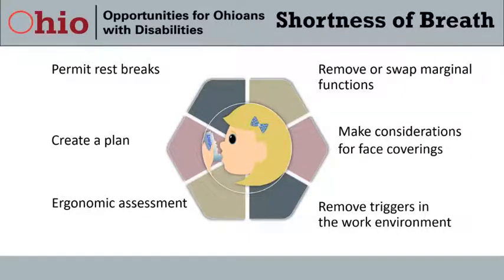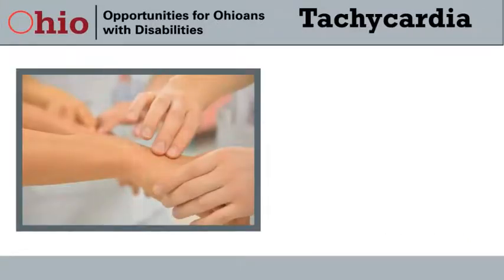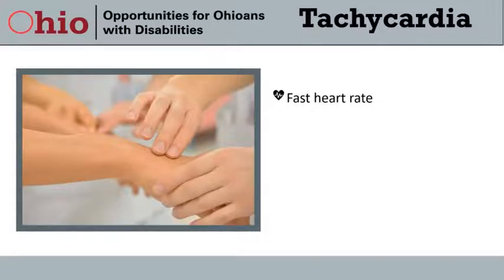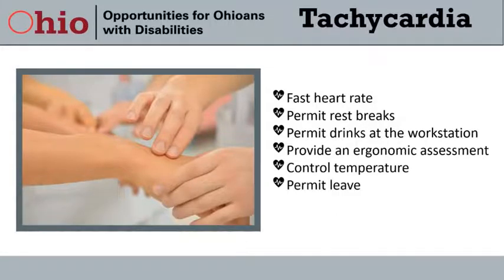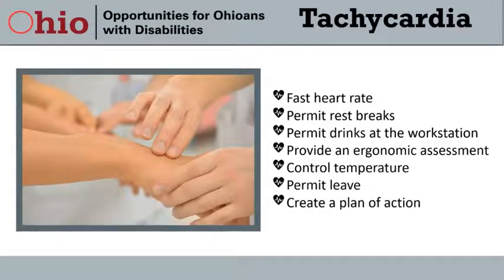Tachycardia, or a fast heart rate, can be caused by a variety of disorders. Many of the accommodations already mentioned can be effective here, like permitting rest breaks, permitting drinks at the workstation, and providing an ergonomic assessment. Additional ideas include controlling the temperature of the workstation or permitting leave so the employee can get treatment for the condition. Just like with shortness of breath, it's important to create a plan of action to handle a sudden onset of tachycardia for the safety of the employee.